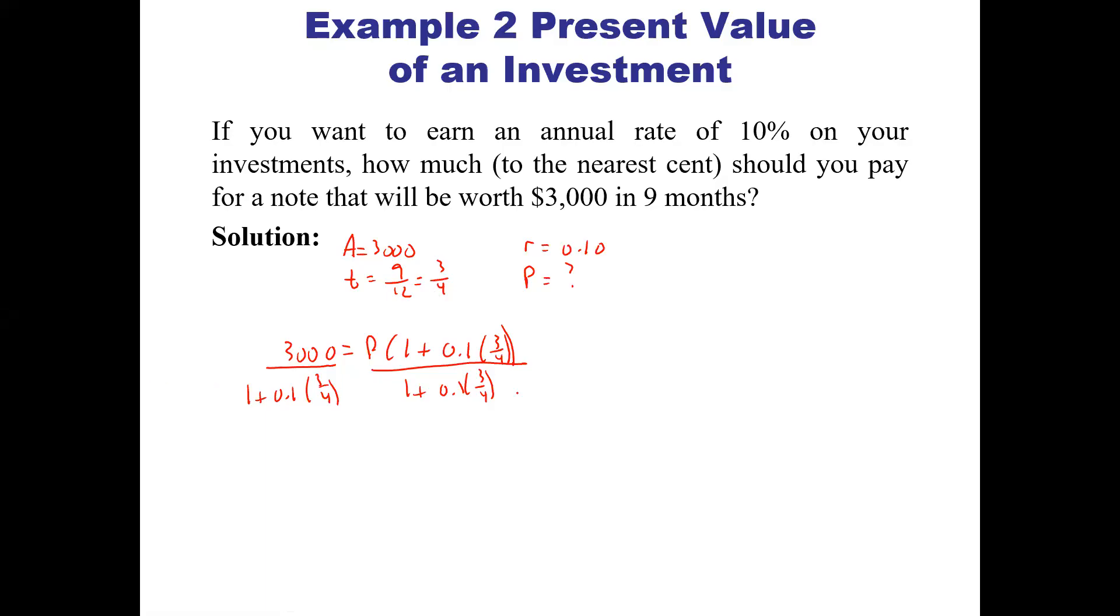That gives us P equals $2,790.70. That's the amount we have to actually put into the account to get the future value—that's the principal we would have to have.